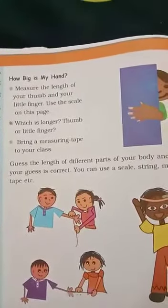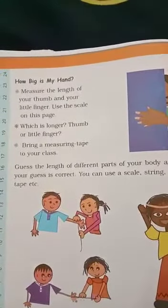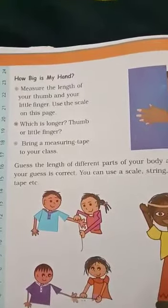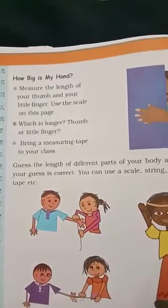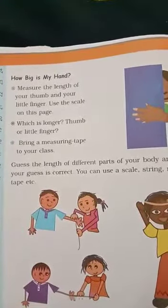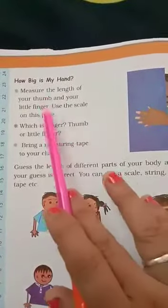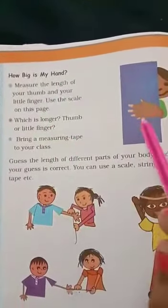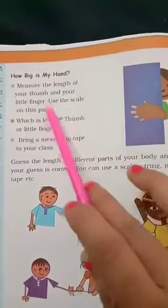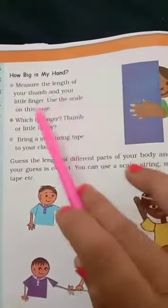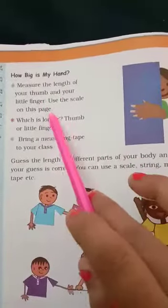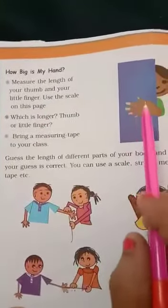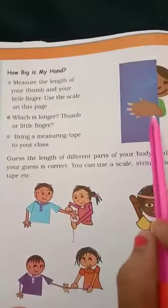Hello children, welcome to LBS. Today I'm going to teach you subject Maths, Standard 3, Chapter Number 4: Long and Short. Students, open your page number 50 in your textbook. You are given a picture of one hand. Measure the length of your thumb and your little finger using the scale on this page. You have to measure your thumb and little finger.